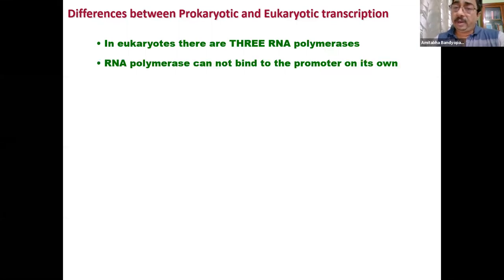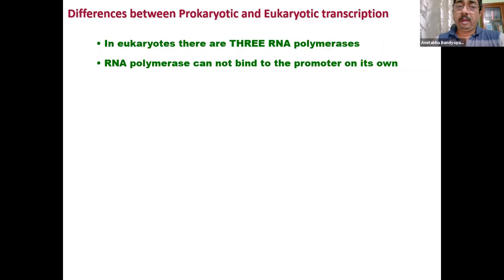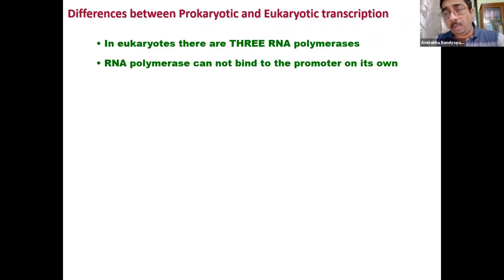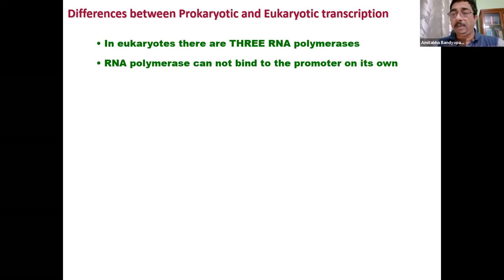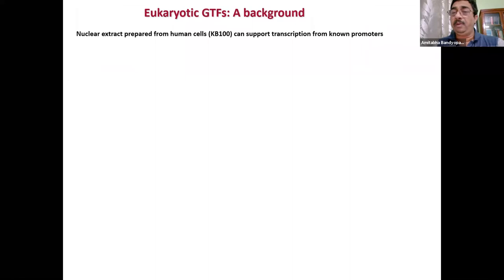This is very important: unlike in prokaryotes, in eukaryotes RNA polymerase cannot bind to the promoter on its own. Please remember that in prokaryotes, the sigma subunit is part of the RNA polymerase. How was this demonstrated? It was demonstrated by a classic series of experiments conducted in the laboratory of Robert Roeder at Rockefeller University.